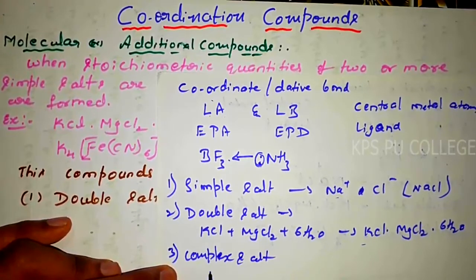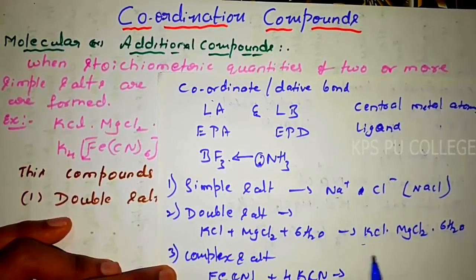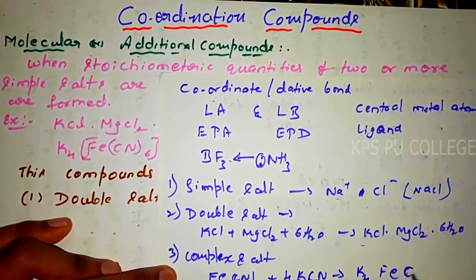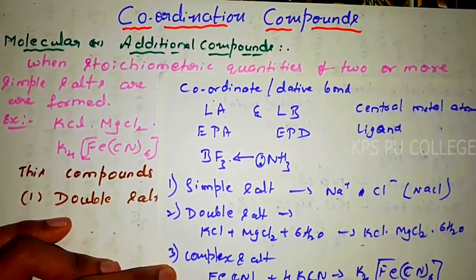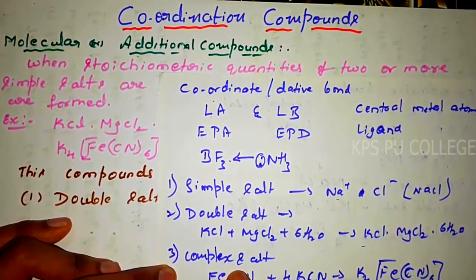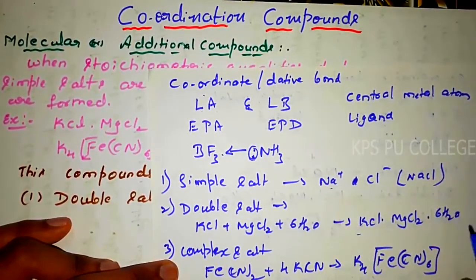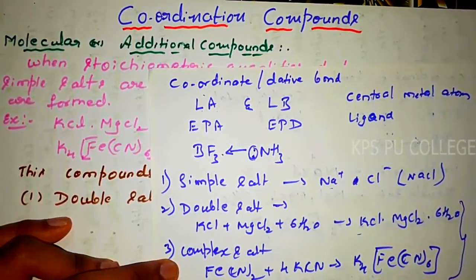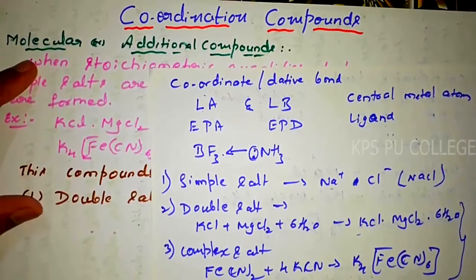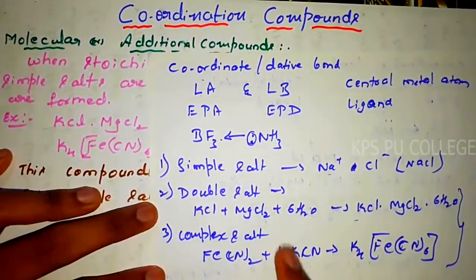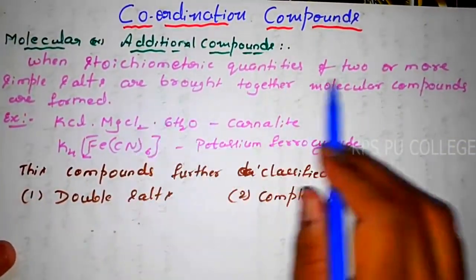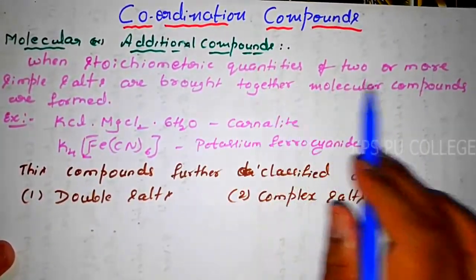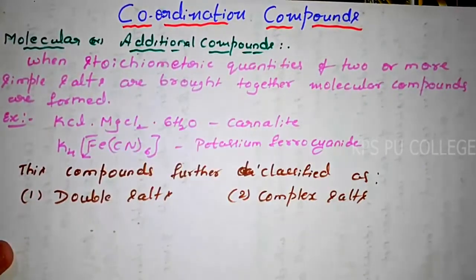Complex salt — for example, FeCN2 plus 4KCN gives K4[Fe(CN)6]. This is also a kind of salt and it is a coordination compound. Double salt and complex salt both come under molecular or additional compounds, which are formed when stoichiometric quantities of two or more simple salts are brought together.